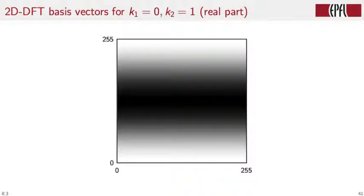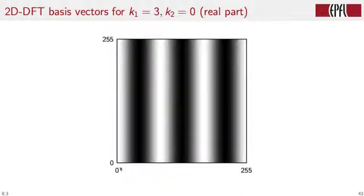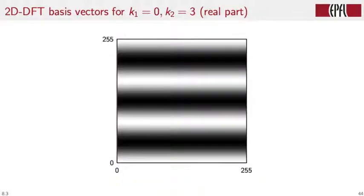We can invert the roles of the vertical and horizontal frequency, and we get an image which is simply a 90-degree rotation of the previous one. We can increase the horizontal frequency. At this point, for k1 equal to 2, we will have that the basis function spans two periods over the support of the image. This would be three periods.